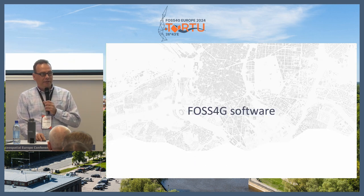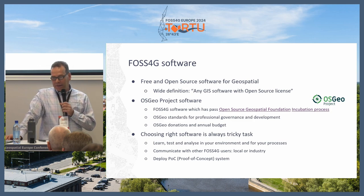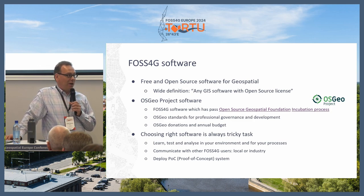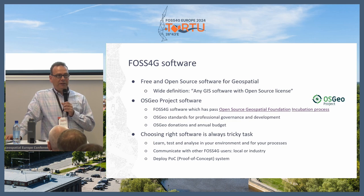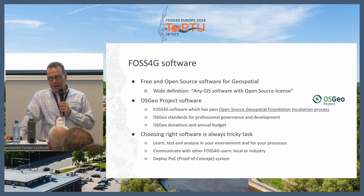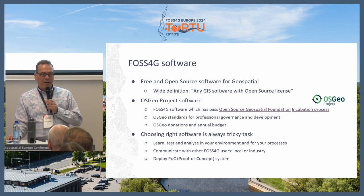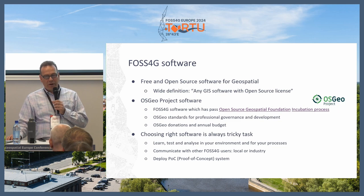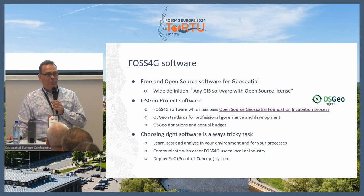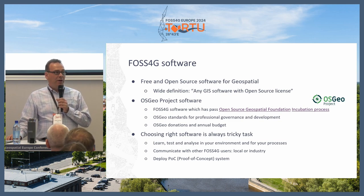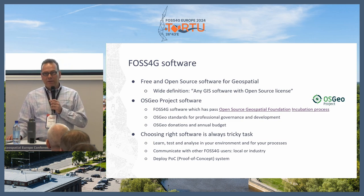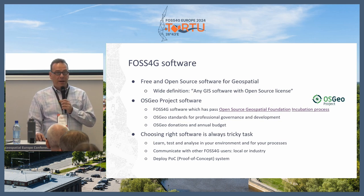FOSS4G software — my definition is any GIS software with an open source license. OSGeo gives some insurance about the quality and life cycle of software. But choosing the right software is always a risky task. My recommendation is to deploy proof of concepts and learn and discuss with other users about how they use it and what problems they have. Every software has problems, challenges, and bugs. Think about the risk of taking one software and implementing your enterprise GIS on top of it.